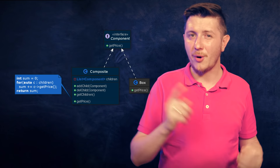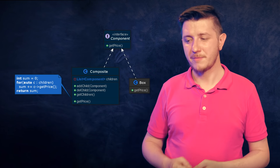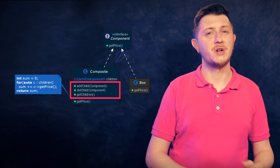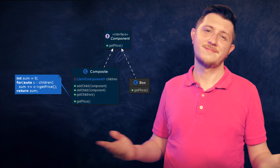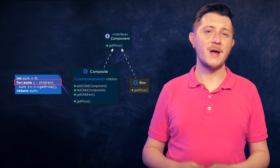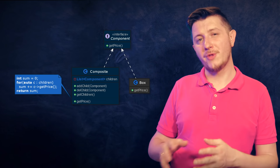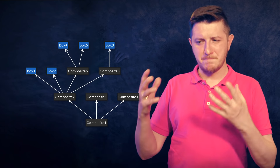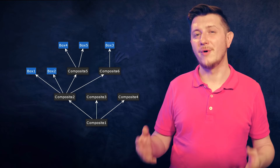All the main logic happens in the composite class. It will use the component interface, store references to boxes, and provides methods to manage those boxes: AddChild, ListChildren, RemoveChild, and so on. For getPrice, the composite iterates over every single child, calls getPrice on it, and returns a sum — we are essentially delegating all the work to children. Importantly, because composite implements the component interface, we can have multiple nested composites as children of our main root composite. It's easy to use, very pleasant, and simple to learn.